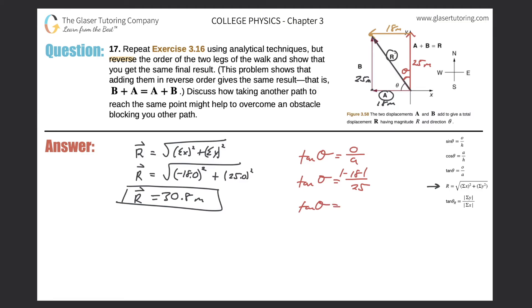18 over 25 comes out to 0.72. Now do the inverse tan of both sides, so inverse tan of 0.72, then you get an answer of 35.6 degrees. And then the problem before, I think we...